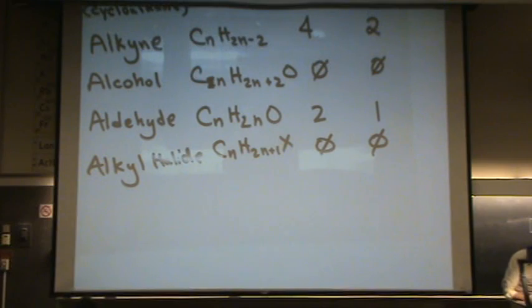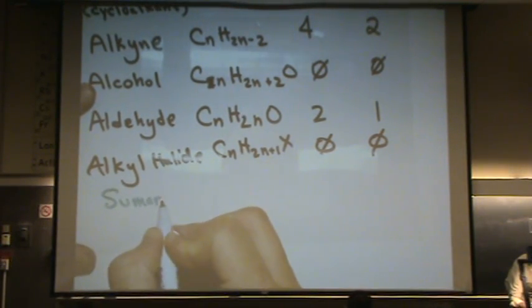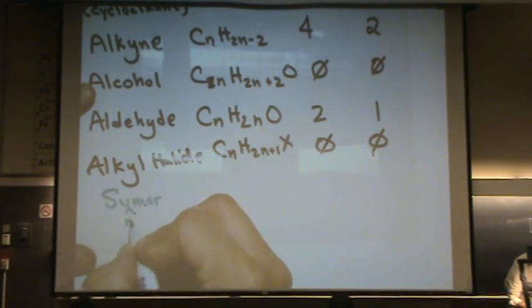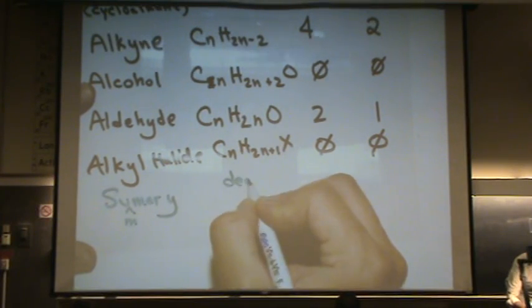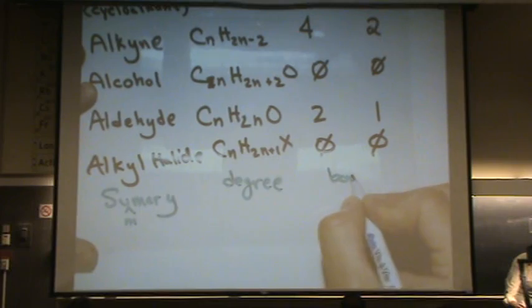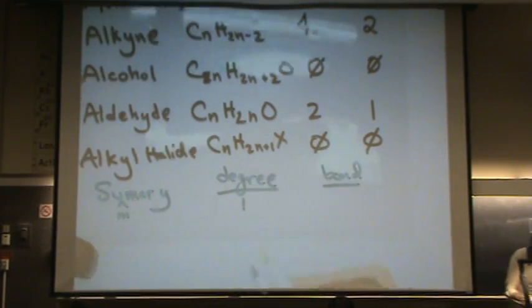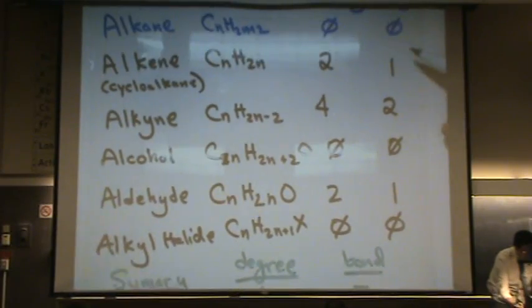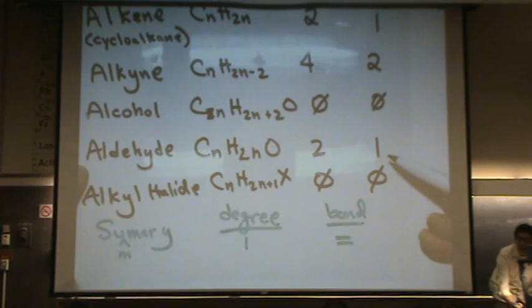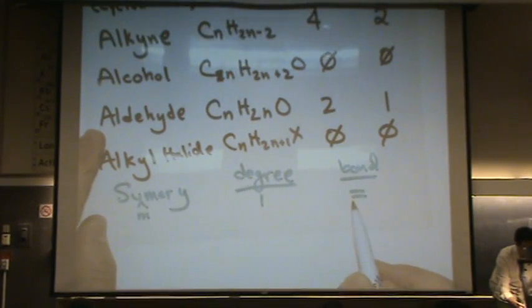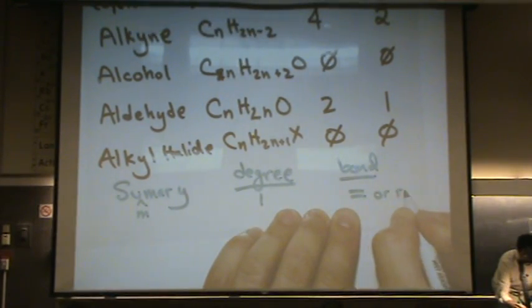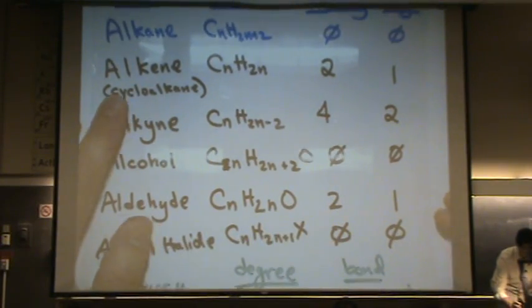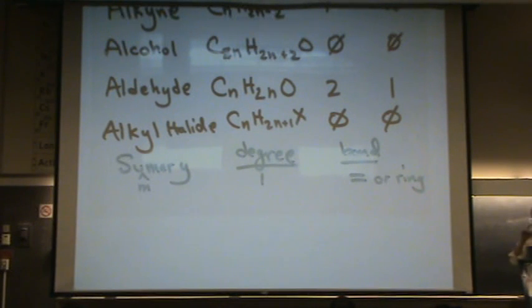So let me do a little summary here at the bottom. If you have one degree of unsaturation, that means two possible things. You either have a double bond, for example, the alkene or the aldehyde. Aldehyde has a C double bond O. So if you have one degree of unsaturation, that means you have a double bond or you have a ring. For example, the cycloalkane also has one degree of unsaturation. So if you ever calculate one degree of unsaturation, you know that there's a ring or a double bond. If you calculate the degree of unsaturation, you know what the functional group will be.